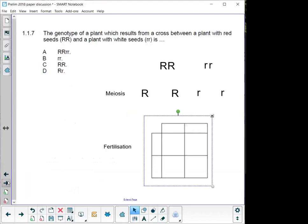Okay, next question. 1.1.7. The genotype of a plant, which results from a cross between red seeds, that's a capital R, capital R, so that says to me that this is dominance, capital R. There's a small R, capital R, there's a small R, and a capital R. Just a moment. Okay, sorry about that. I need some kids that are at home that need some attention as well.